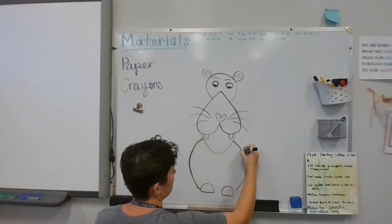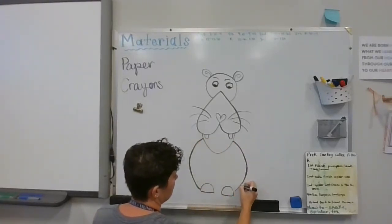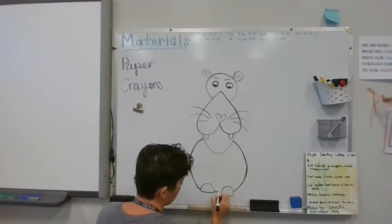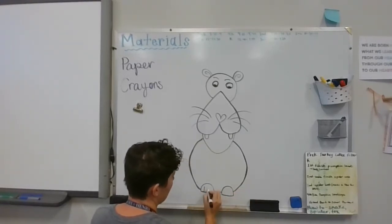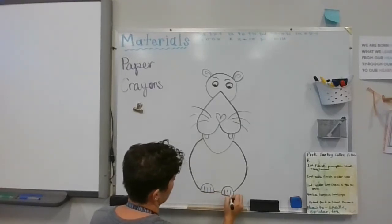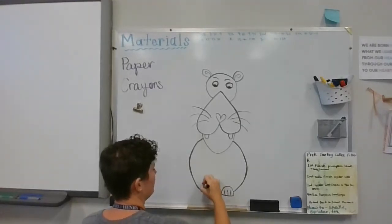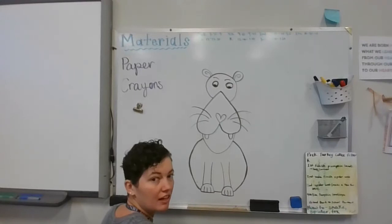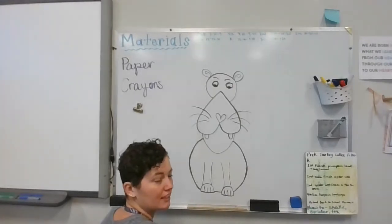Same thing on this side. I'm going to connect them, connect them in the middle, and then add some lines so it looks like he's got some toes in there. Now he needs lines going up to make it look like his legs. So there's his lines to make it look like his front legs.